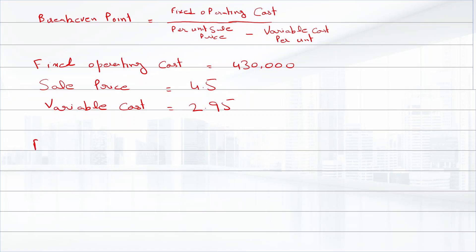So, breakeven point is equal to $430,000 divided by $4.50 minus $2.95.